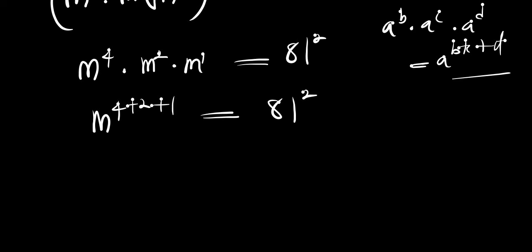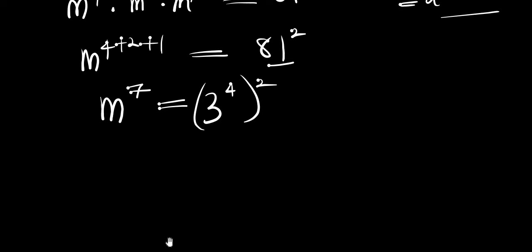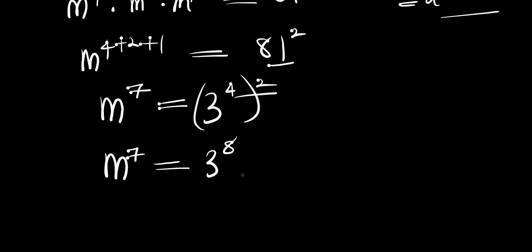This gives us m to the power 7, equals 81, which is simply 3 to the power 4, raised to the power 2. So we are now going to have m to the power 7 equals 3 to the power 8, since 4 times 2 is 8.